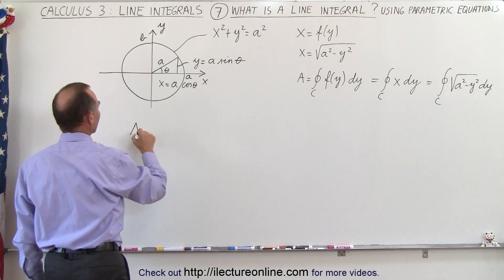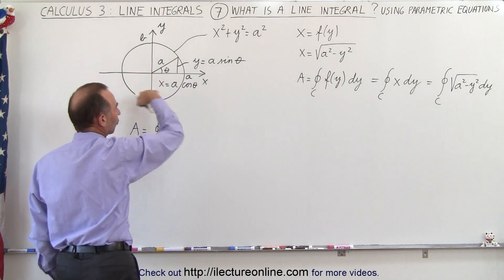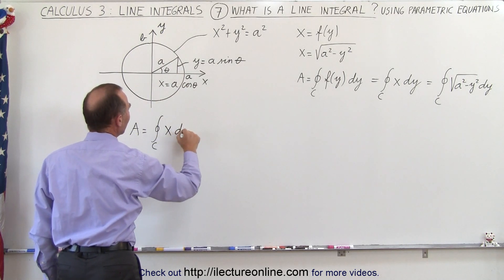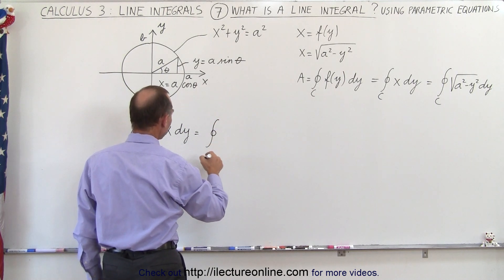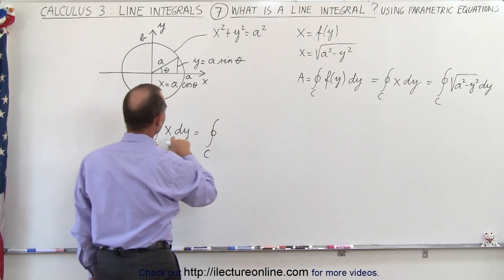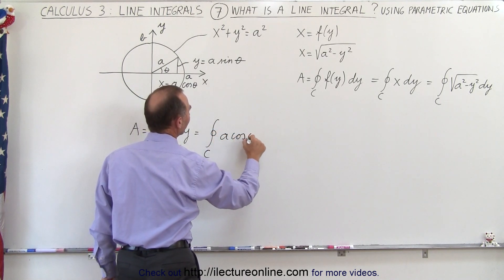So we can say that the area, which is defined as the integral, the line integral, all the way around the circle of x times dy, can be written as the line integral around the entire circle. Instead of x, we're going to write a times the cosine of theta.